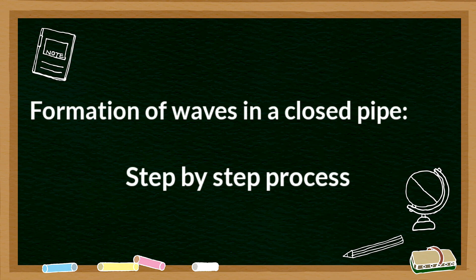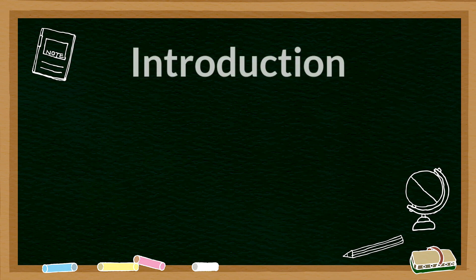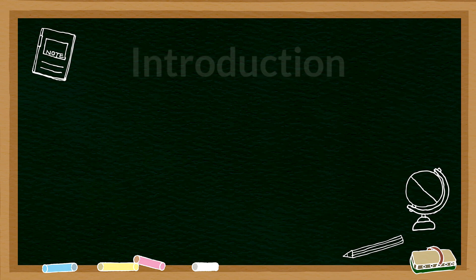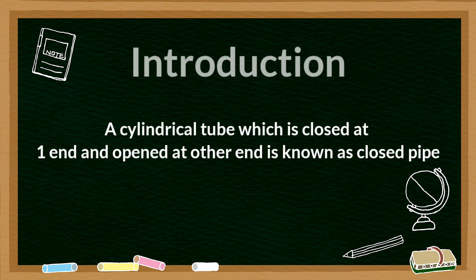Then start writing the process step by step. In long answers, start with a small introduction. The introduction means - after writing the heading, write a starting introductory line. For the question 'How are stationary waves formed in closed pipes?' - don't go directly into methodology. First write a point about what a closed pipe is. You already wrote the title 'Formation of stationary waves in closed pipes,' so as first point write: 'A cylindrical tube which is closed at one end and open at the other end is called a closed pipe.'